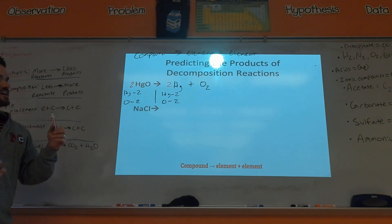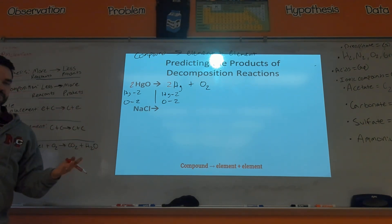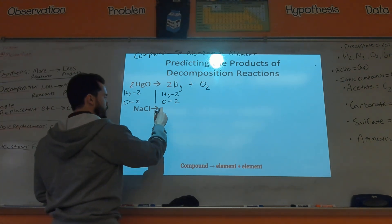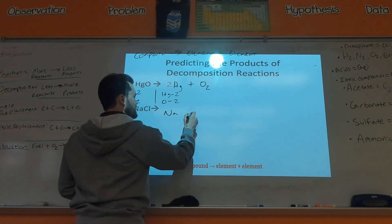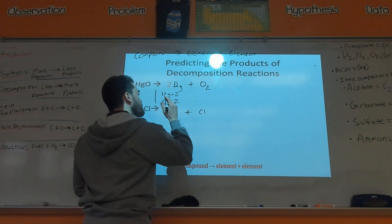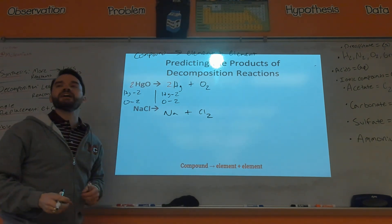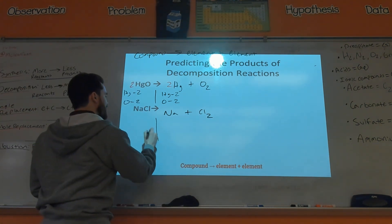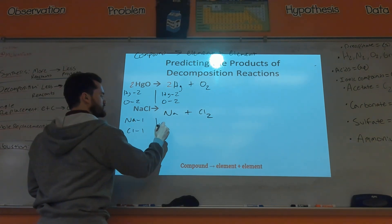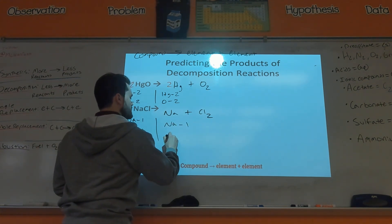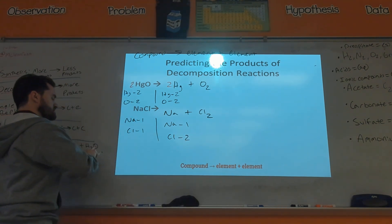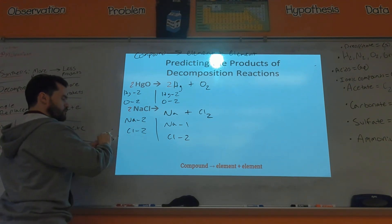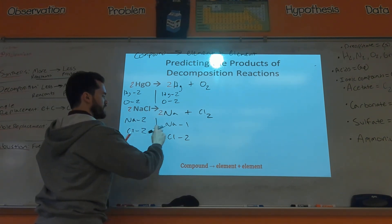For NaCl decomposition, the only thing that can happen is it breaks apart into Na and Cl. Remember your diatomic elements — chlorine will be Cl₂. To balance: one Na and one Cl on the left, one Na and two Cl's on the right, so double the NaCl, then double the sodium. Now everything's balanced.